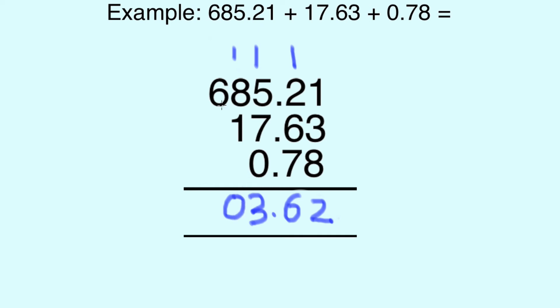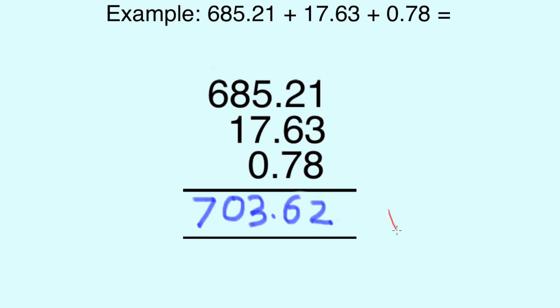A 1 is carried above the 6, and it's a simple 1 plus 6 equals 7, which gives me an answer of 703.62. So 685.21 plus 17.63 plus 0.78 is 703.62.